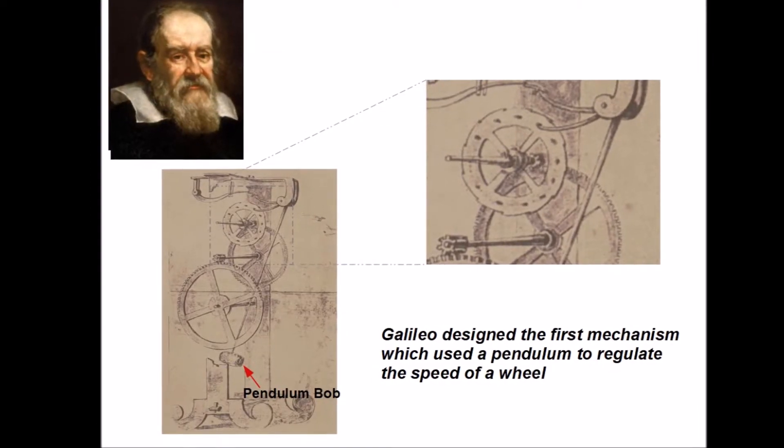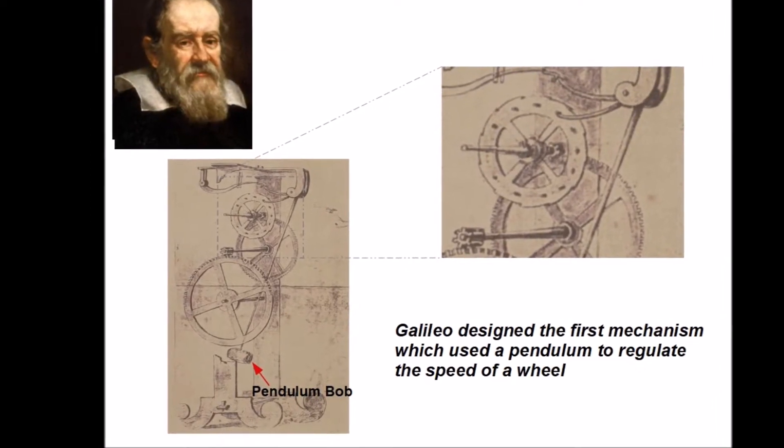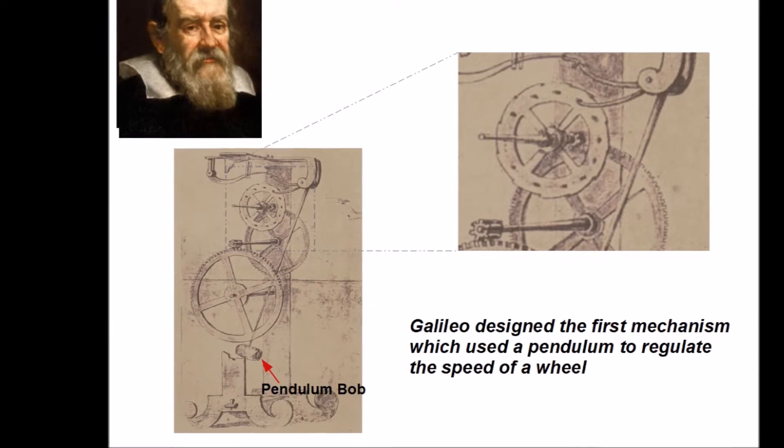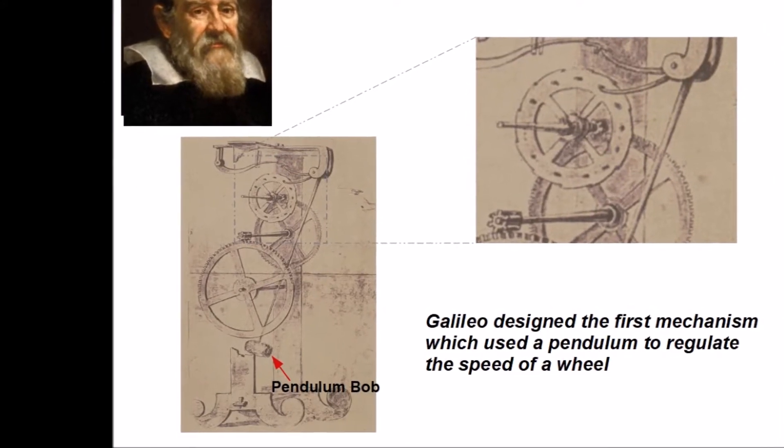In his later years, Galileo designed the first machine which would take the swinging motion of the pendulum and convert it to a time regulator.